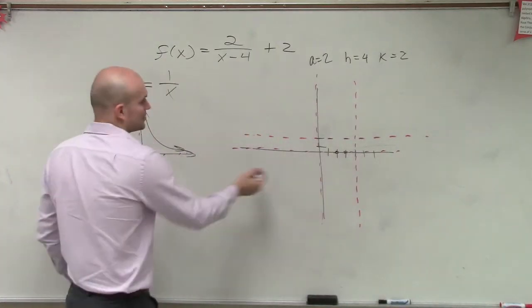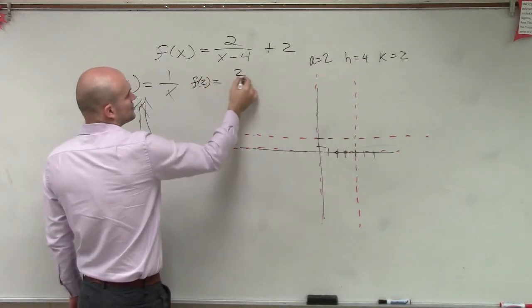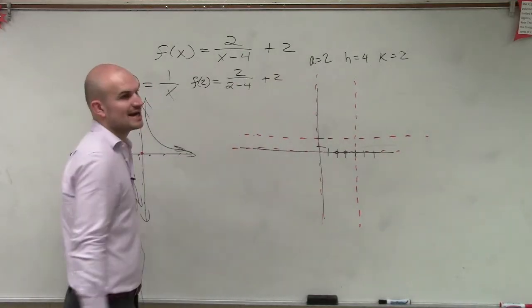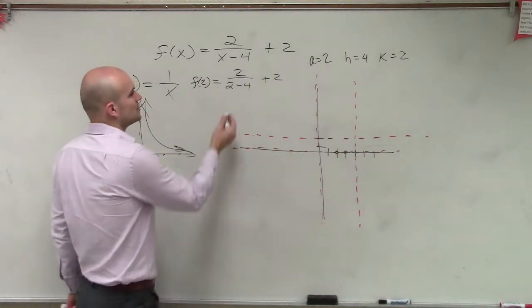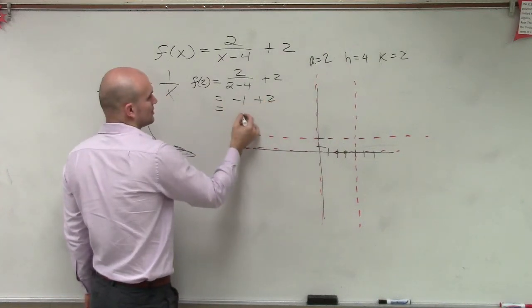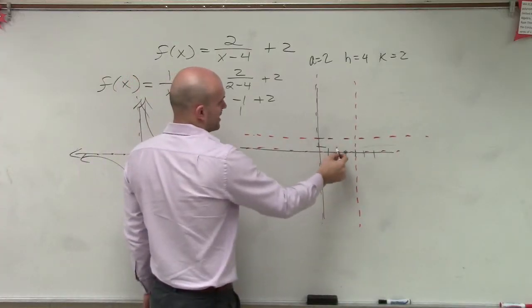So let's go ahead and do f of 2. So f of 2 equals 2 divided by 2 minus 4 plus 2. 2 minus 4 is negative 2. 2 divided by negative 2 equals negative 1 plus 2, which equals 1. So at 2, I go up 1.